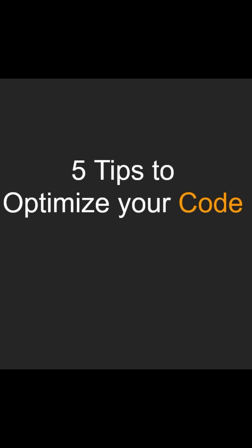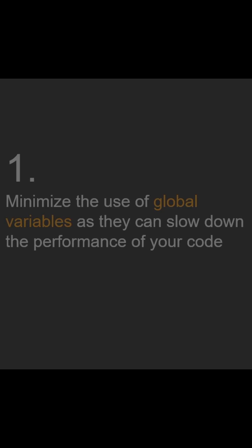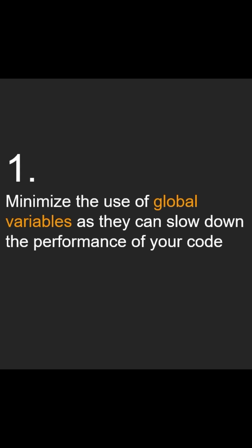Five tips to optimize your code. Number one: minimize the use of global variables, as they can slow down the performance of your code.